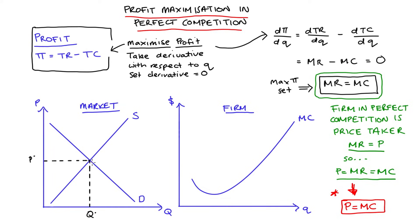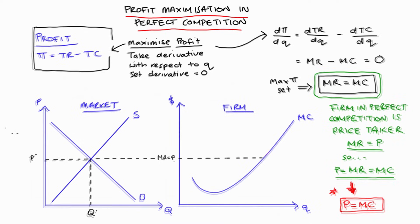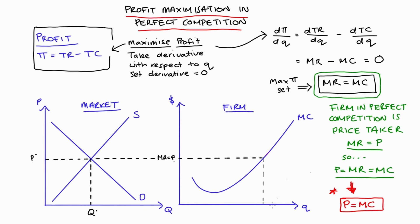On the right hand side diagram, I have a marginal cost curve for a representative firm in the market — there are many, many firms in perfect competition, and this is the marginal cost curve for just one. Profit maximization for that firm looks like this: the firm takes price P star, which is also their marginal revenue, and sets that equal to marginal cost. That gives us small q star — the firm's optimal level of production that maximizes profit.